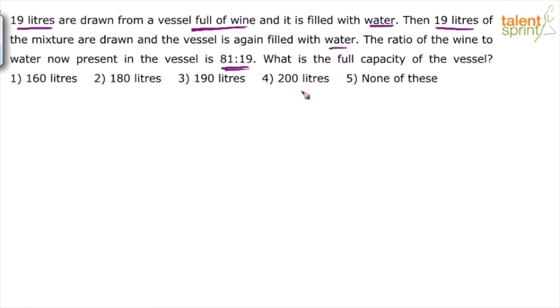After doing this operation two times, we find that the ratio of wine to water is 81 to 19 — 81 parts of wine and 19 parts of water. What is the full capacity of the vessel? We are supposed to find the full capacity of the vessel.